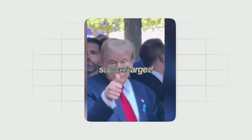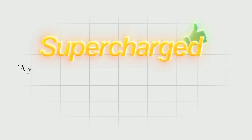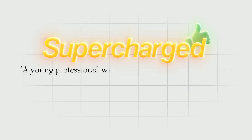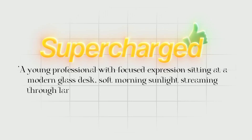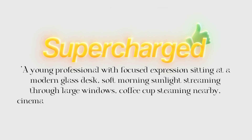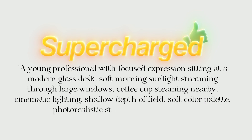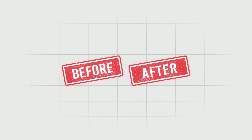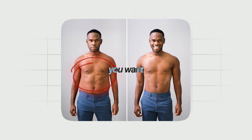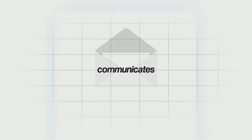Here's a basic prompt versus a supercharged one. Basic: "Show a person working at a desk." Supercharged: "A young professional with focused expression sitting at a modern glass desk. Soft morning sunlight streaming through large windows. Coffee cup steaming nearby. Cinematic lighting. Shallow depth of field. Soft color palette. Photorealistic style. Front-facing angle." And here's a game changer for storytelling: when showing before and after scenarios, keep everything identical except the elements you want to highlight. This creates a powerful visual impact that instantly communicates your message.